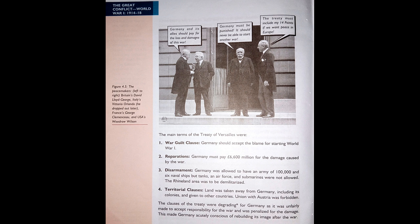The main terms of the Treaty of Versailles: One — War Guilt Clause: Germany should accept the blame for starting World War One. Two — Reparations: Germany must pay six thousand six hundred million pounds for the damage caused by the war. Three — Disarmament: Germany was allowed an army of one hundred thousand and six naval ships, but tanks, air force and submarines were not allowed. The Rhineland area was to be demilitarized — demilitarized meaning having had military forces removed.